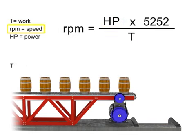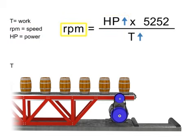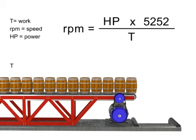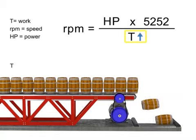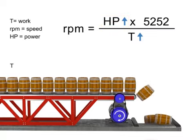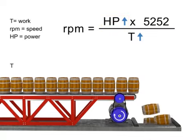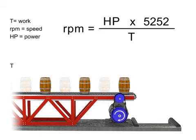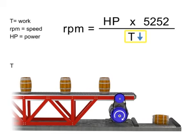If speed remains constant, then torque and horsepower are proportional. As the torque increases, horsepower also increases to maintain constant speed. Let's say we want production to increase, but the speed of the conveyor to remain constant. If torque increases, horsepower also increases to compensate. This means a more powerful motor is needed to produce more torque at the same speed. Similarly, if we wish speed to remain constant and decrease torque, then horsepower also decreases.